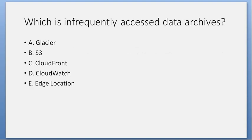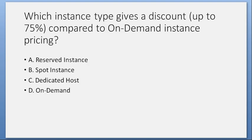Which is infrequently accessed data archives? A. Glacier. B. S3. C. CloudFront. D. CloudWatch. E. Edge location. Answer: A. Glacier.